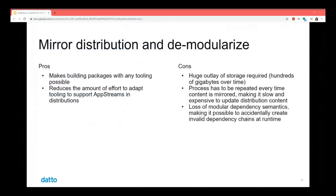The mirroring and demodularization option is easy — it makes building packages with any tooling possible and reduces the effort to adapt tooling to support app streams. However, the major downside is that it takes a lot of space — hundreds of gigabytes over time if you're mirroring on every update push. The process has to be repeated every time the content is mirrored, making it slow and expensive.